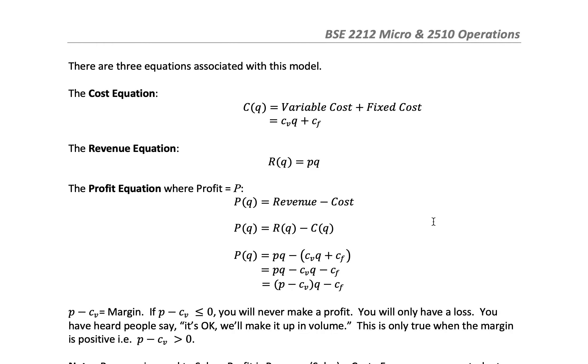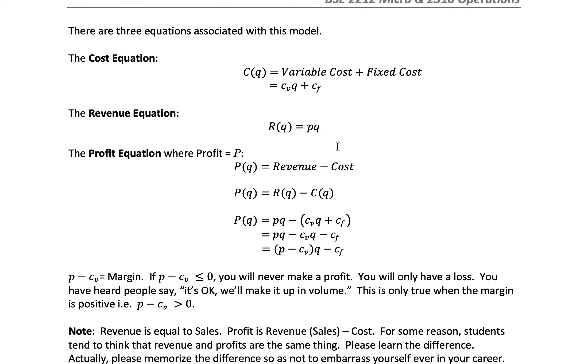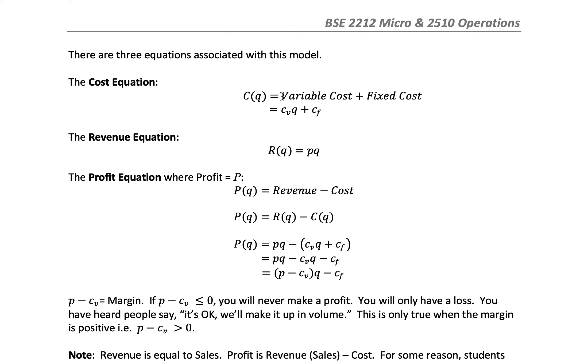There are three equations associated with these three constants and this one variable. The variable is in every equation. We have a cost equation, a revenue equation, and a profit equation. Cost is variable cost plus fixed cost. Variable cost is dependent on how many you produce and sell, so it's Q times variable cost. The fixed cost is just the fixed cost. You should be doing this all on the same time period, either a month or a year.